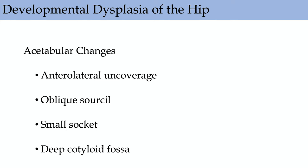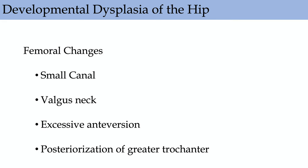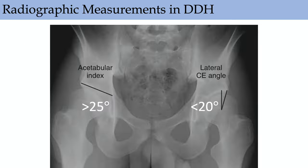For developmental dysplasia of the hip, you see acetabular changes such as anterolateral uncoverage, oblique sourcil, small socket, and deep cotyloid fossa. On the femoral side: small valgus canal with excessive anteversion and posteriorization of the greater trochanter. Pre-operatively, modular stems or Wagner cones are often used to adjust anteversion. Radiographic parameters: the lateral center edge angle — if less than 20 degrees, that's dysplastic. If the acetabular index is greater than 25 degrees, that's also dysplastic.